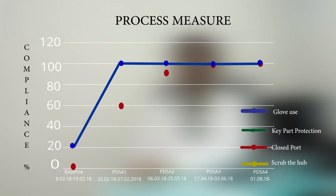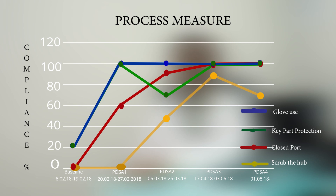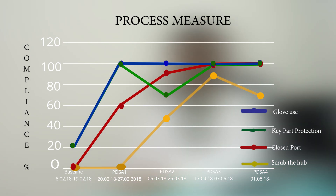This is our run chart which depicts the process measure. Usage of glove as well as closed port was easy to implement. Protection of key parts was initially easy but later, with the entry of new staff, there was a dip. However, it improved when it was made part of onboarding unit education. Scrub the hub requires sustained efforts to get incorporated into practice. Scrubbing is easy while allowing to dry is dependent on the sickness level of the child.